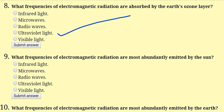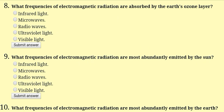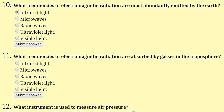What frequencies of electromagnetic radiation are most abundantly emitted by the Sun? The answer is infrared. Infrared is emitted. Visible light is not emitted by Earth — it comes from the Sun and contacts objects, then reaches our eyes. Visible light is not the correct answer here; infrared light is correct.